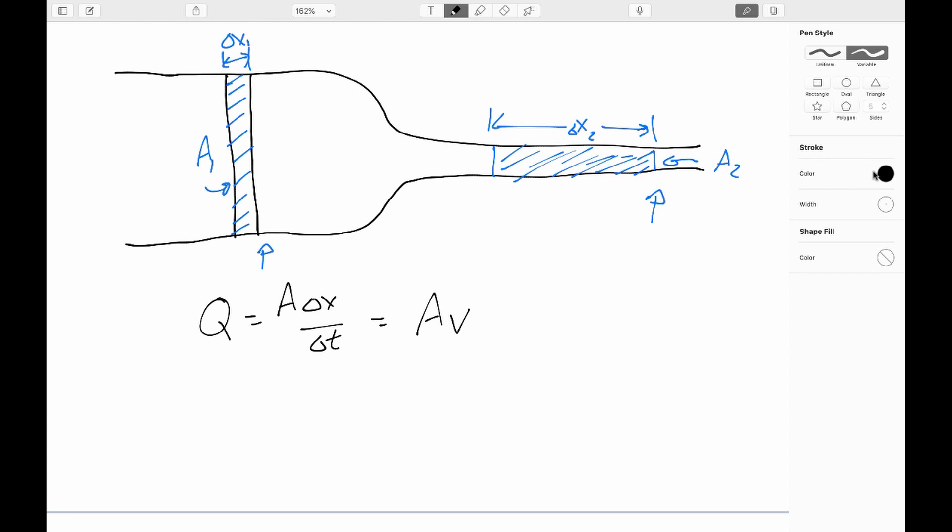Anyway, the equation of continuity says that for an incompressible fluid, this is observation point one, that's observation point two, we need Q1 to equal Q2, or we can also write this A1 V1 equals A2 V2. The way I like to think about it is just stuff in has to equal stuff out, or else stuff will pile up until it does.